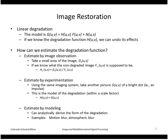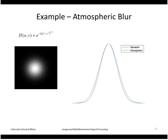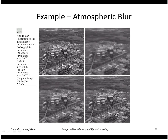Finally, if we have sufficient knowledge of the degradation process, we can analytically derive its form. We'll see two cases: motion blur and atmospheric blur. Atmospheric blur models the degradation of an image viewed through the atmosphere — from a satellite or airplane — using a degradation function whose Fourier transform looks very similar to a Gaussian, except the exponent is five-sixths rather than one, giving a slightly broader shape. Here are results simulating atmospheric blur with large, mild, and low turbulence values of K.